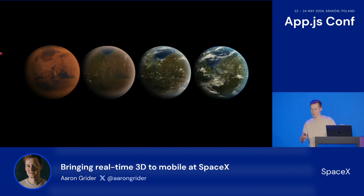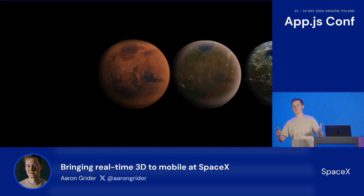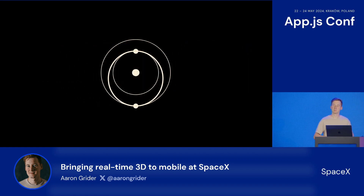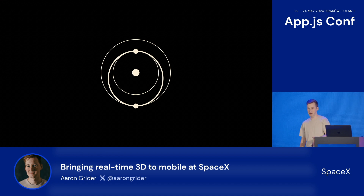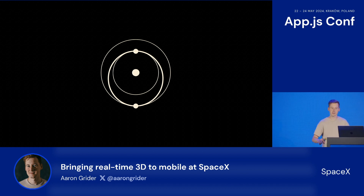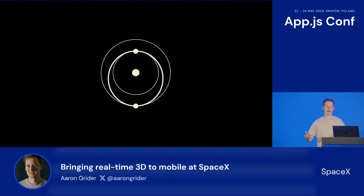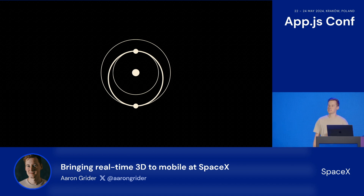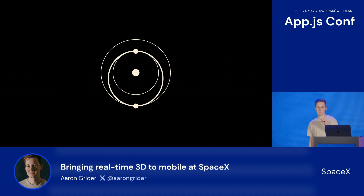We also have this other project called Starlink. Starlink is a space internet service provider — we provide high-speed, low-latency internet from space almost anywhere on the planet. Starlink was originally created to help fund the development of Starship and get us to Mars, but in the here and now, we're connecting places on Earth that previously were never connected. We're providing access to education, healthcare, and economic opportunities to communities all around the world. We're currently available in 100 countries and have over 3 million users.